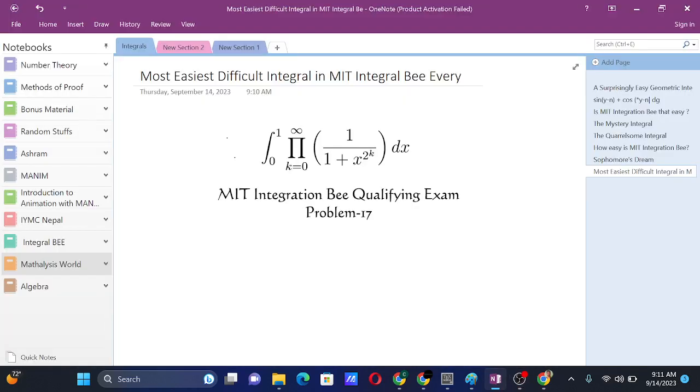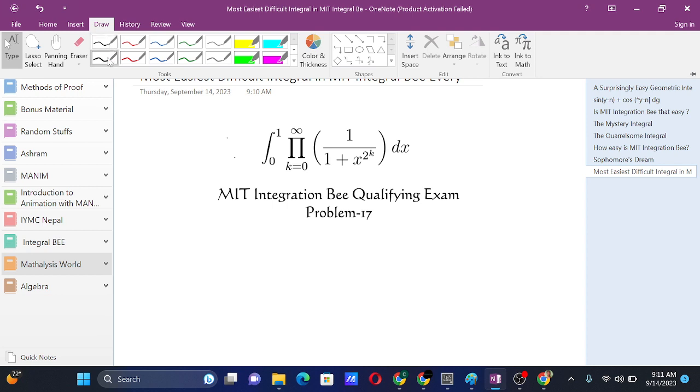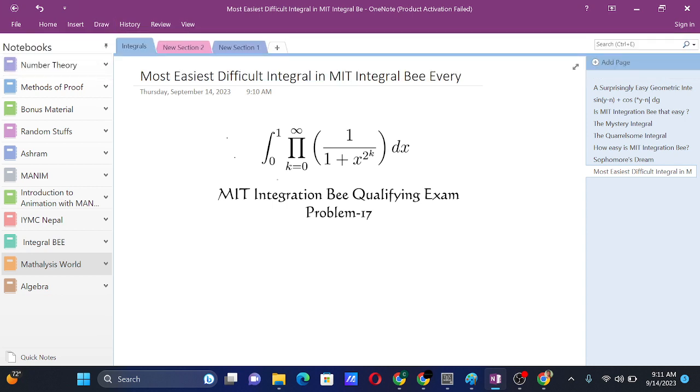This is the most easiest difficult integral in MIT Integral Bee Ever. We have this problem: integral from 0 to 1 of the product notation k equals 0 to infinity of 1 over (1 plus x to the power 2 to the power k) dx.